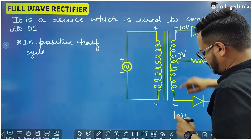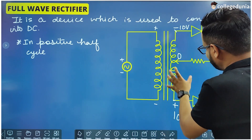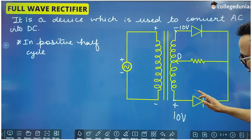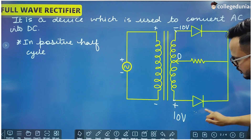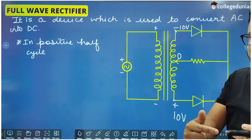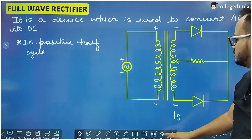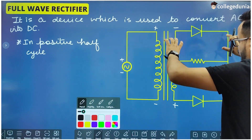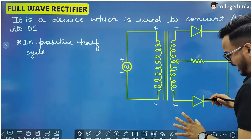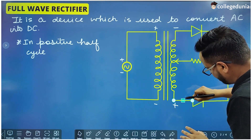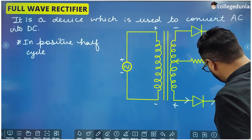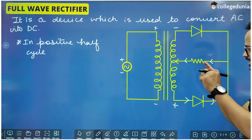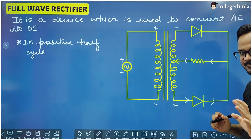Now for the other PN junction: the P part is at +10 volt and N is at 0 volt. The P part is at higher potential and the N part at lower potential, so this PN junction is forward biased and it allows current to pass through it. So current will not flow through the upper half but will flow through the lower half. The current flows in this direction through that forward biased PN junction and through the output resistor in the same direction — giving a continuous flow of current in one particular direction, which is direct current.